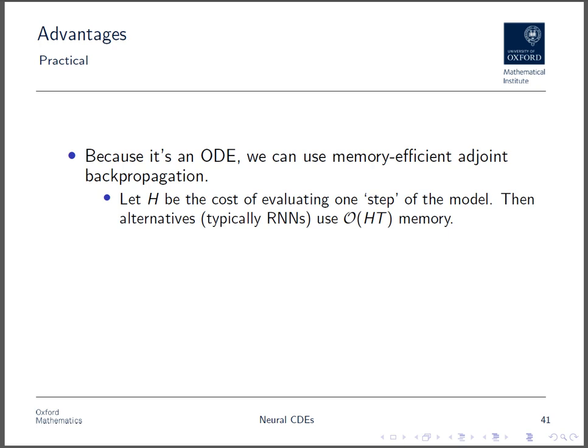To quantify this, if t is the time horizon as before, and if h is the cost of one step of a model, which is either one step of a recurrent neural network, or the f on the right-hand side of a neural CDE, then usually we'd expect to need ht amount of memory to record something costing h, t times. Here, we can reduce that to just h plus t. We still have to perform each step, costing h, and we still have to hold the underlying data in memory, costing t, but now we just have to add those together.